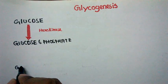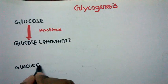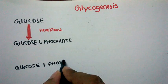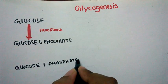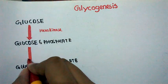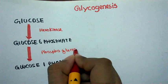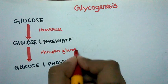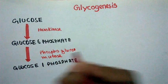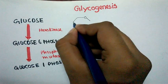Next, glucose-6-phosphate would be converted into glucose-1-phosphate. This is an isomerization reaction and it is catalyzed by phosphoglucomutase.